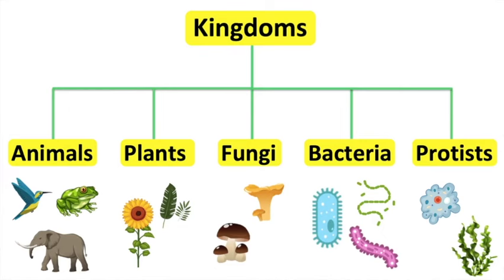Fungi cells can be unicellular or multicellular — for example, mushrooms and yeast. They can't produce their own food; instead, they feed on organic matter. Bacteria are unicellular organisms found everywhere. Protists are mainly unicellular organisms that live in water — for example, algae and chlorella. Some produce their own food or get food from the environment.